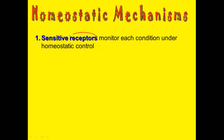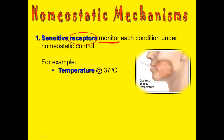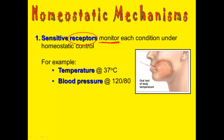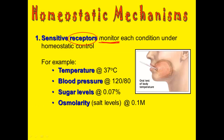In order for homeostasis to work, you have to be able to sense a change in your body. Receptors do this — they monitor changes that happen in your body. Some sensors monitor temperature, some measure blood pressure, some measure how much sugar you have in your bloodstream, how much salt you have as with osmolarity, and some measure the pH — how acidic or basic your blood is. When you're measuring osmolarity, you're checking for blood pressure.